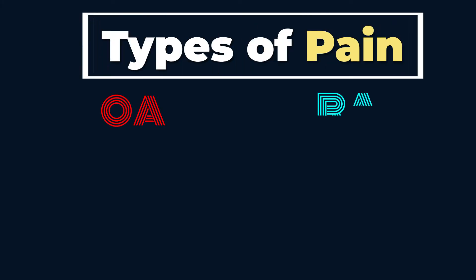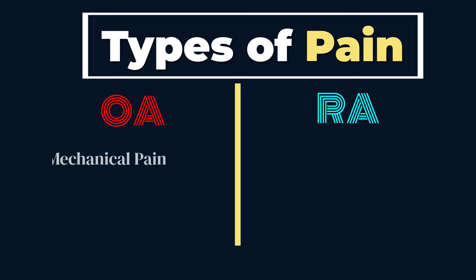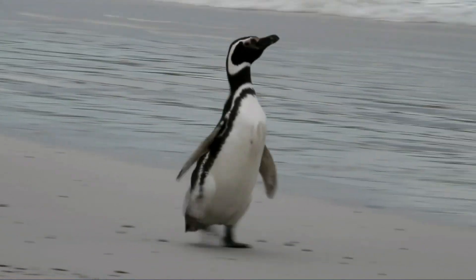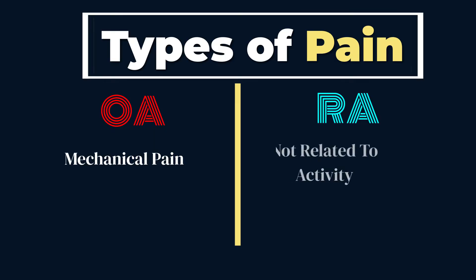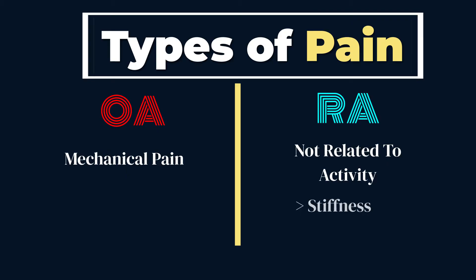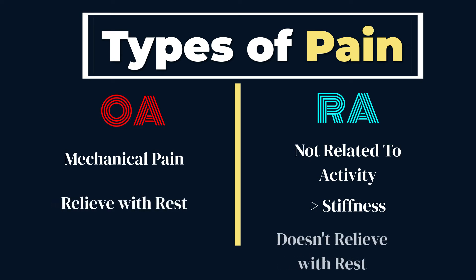Number six: the type of pain. OA pain is what we typically call mechanical pain — for example, one may feel knee pain while walking or running. As compared to RA pain, which does not necessarily relate to activity and can occur anywhere, anytime. Both can cause stiffness, although stiffness usually favours more towards RA. OA pain will often relieve with rest, while RA pain doesn't.